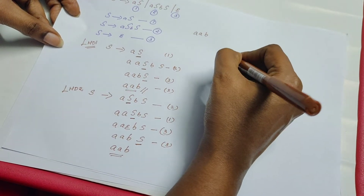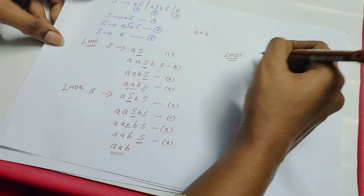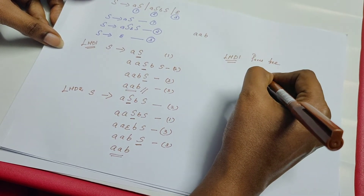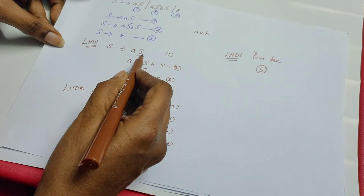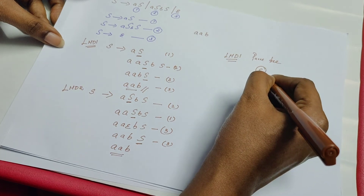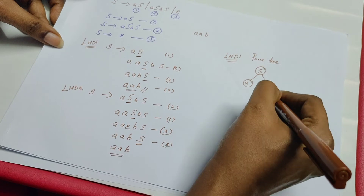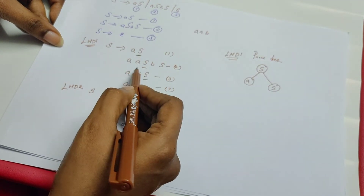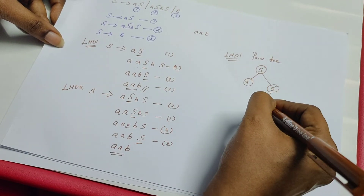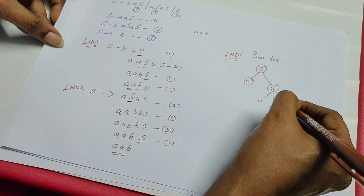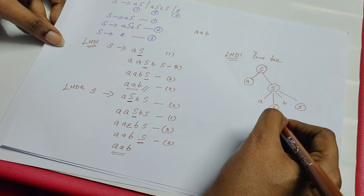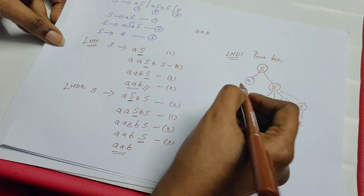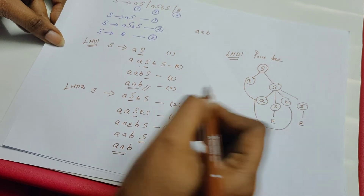Now I am going to draw the parse tree for LMD1. The root of the parse tree is always the start symbol of the grammar. S is replaced by A and S — for every terminal and variable we create a node. This S is then replaced by A, S, B, S at the second step. At the next step, we replace this S by epsilon and this S also by epsilon. If you look at only the terminals of the parse tree — A, A, B — we obtained the string.